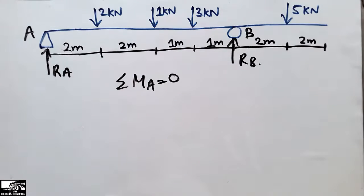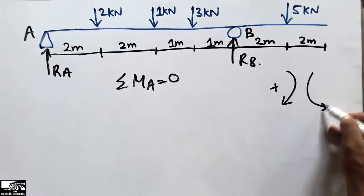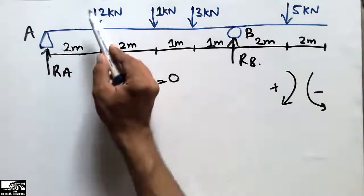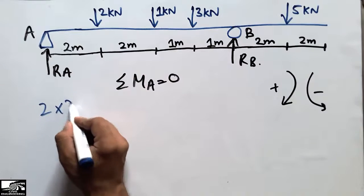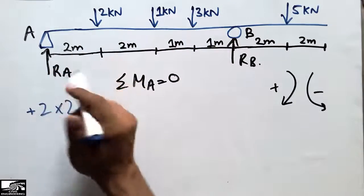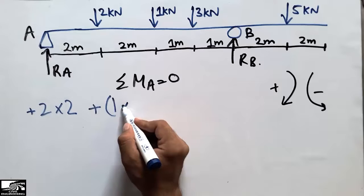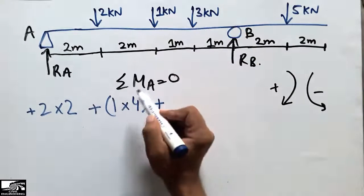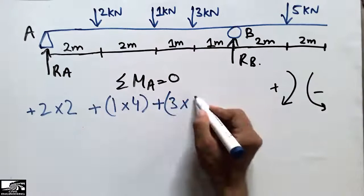To find the first reaction, we take the summation of moments at point A equal to zero. Clockwise moments are positive and anti-clockwise is negative. The 2 kN load acting clockwise gives 2 × 2 = 4. The 1 kN load clockwise gives 1 × 4 = 4. The 3 kN load clockwise gives 3 × 5 = 15.